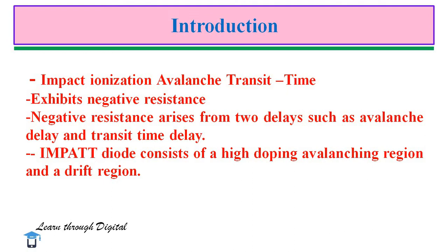Negative resistance arises from two delays: avalanche delay and transit time delay. Avalanche delay is caused by the finite buildup time of avalanche current. The transit time delay is due to the finite time taken by the carriers to cross the drift region. When these two delays add up to 180 degrees, the diode electronic resistance becomes negative.